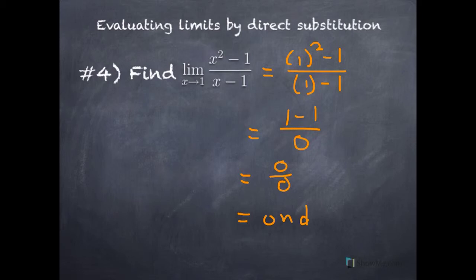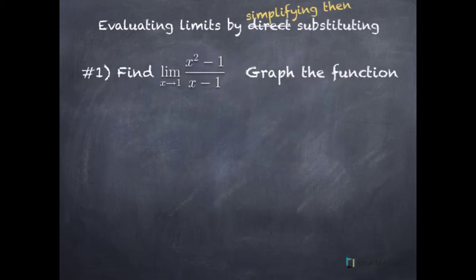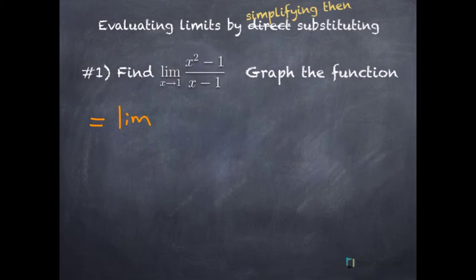So that's one reason why we use tables — because not every problem can you substitute and find what the limit is. Does this limit exist? It looks like it doesn't. But there's something else we can do if direct substitution doesn't work. Let's re-look at this same problem from a different perspective: evaluate the limit by simplifying first, then substituting. Once you substitute 1 in for x, you don't write a limit anymore.